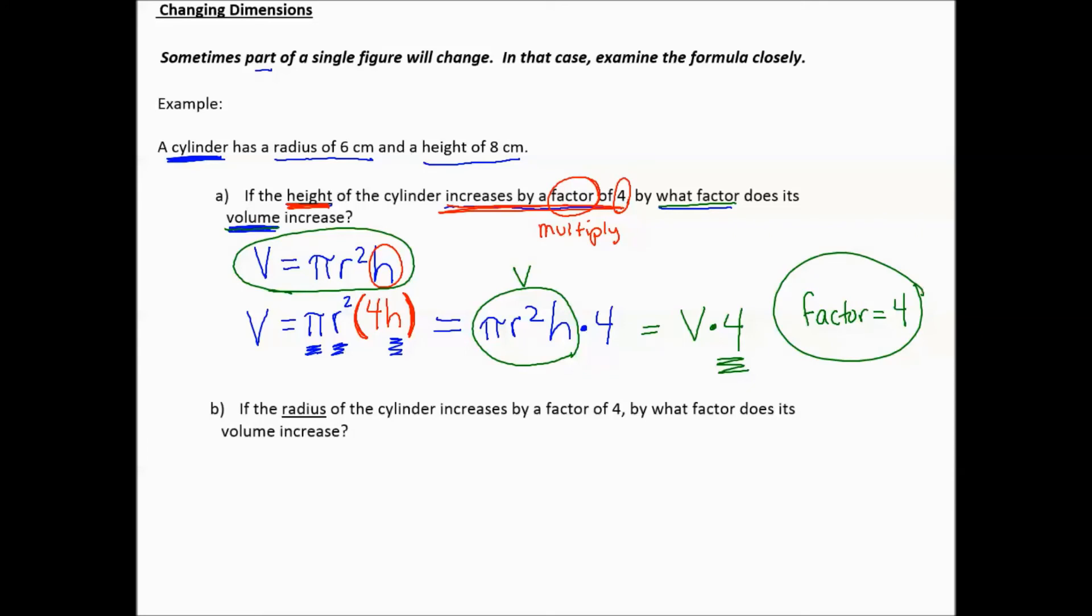Now, notice B asks something similar but slightly different. If the radius of the cylinder increases by a factor of 4, by what factor does its volume increase? So again, we're starting with our volume formula, V equals pi r squared h. But this time, instead of the height increasing, it's the radius increasing by a factor of 4. So we remember factor means multiply. So we're going to take the r, and it will be 4 times r. Everything else around that will stay the same. So the r is squared. That means the 4r is squared. The h is multiplied, the pi is multiplied, and it equals v.